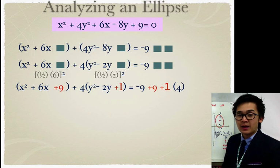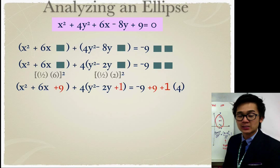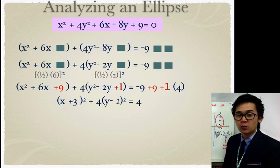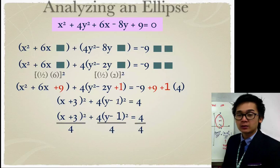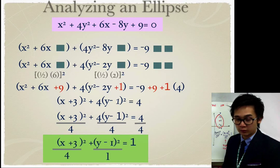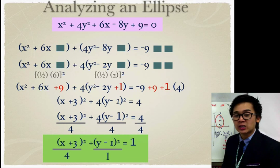Now that we've completed the square, we factor: x² + 6x + 9 becomes (x + 3)², and y² − 2y + 1 becomes (y − 1)². This gives (x + 3)² + 4(y − 1)² = 4. Since the equation of an ellipse must equal 1, we divide all terms by 4, yielding (x + 3)² / 4 + (y − 1)² / 1 = 1. That's how we convert a general equation of a conic section to standard form.